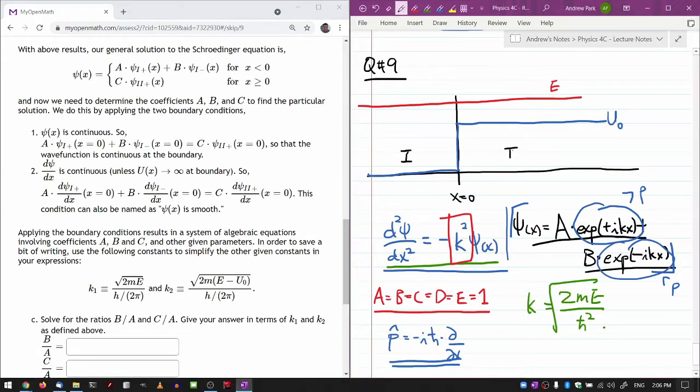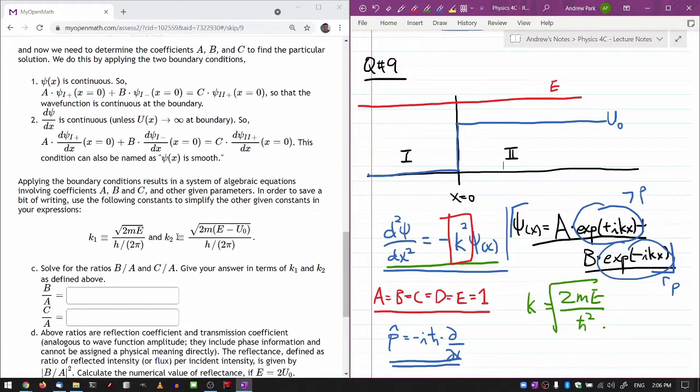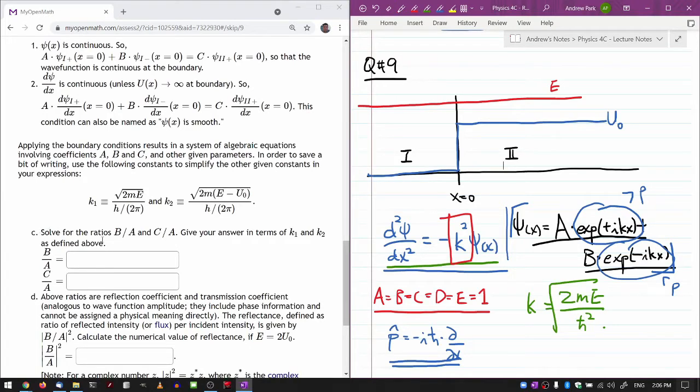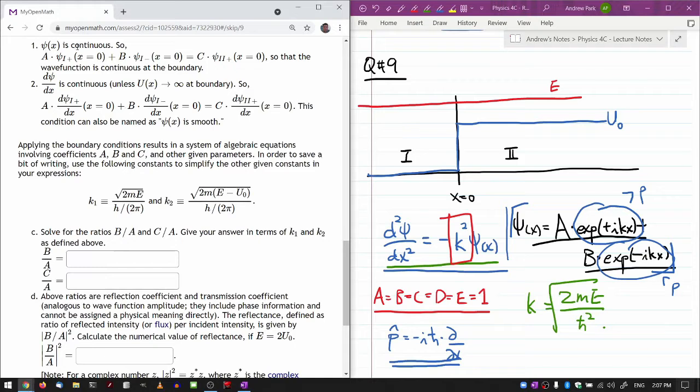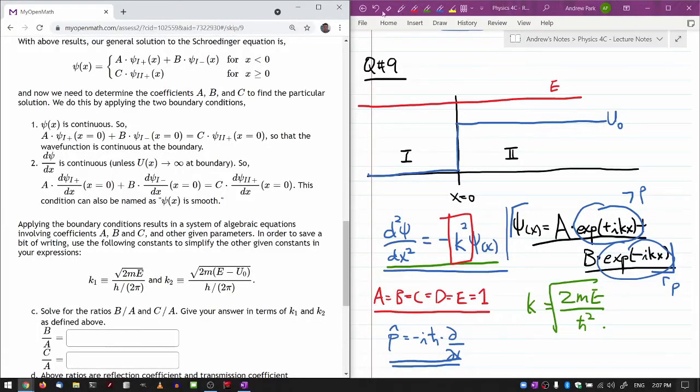Applying the boundary conditions results in a system of algebraic equations involving coefficients a, b, and c, and other parameters. In order to save a little bit of writing, use the following constants to simplify the other given constants in your expressions. I think k1 is already what I was using as k and k2 will be what I can use for in region 2. So this is region 1, and this is region 2. And in parts it's calling for the ratios b over a and c over a. This is covered in the lecture, and this is how it boils down to. When we write down our boundary condition equations, we have two equations but we have three unknowns, a, b, and c.